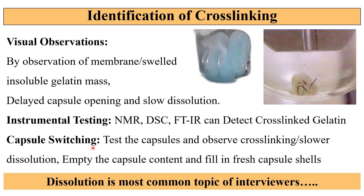Another method is capsule switching. In this test, if the capsules show crosslinking or slower dissolution, empty the capsule formulation on which the dissolution was done. Take that content and fill it into a fresh capsule, then perform the dissolution. If that dissolution is acceptable, then it means the earlier tested capsules were crosslinked.